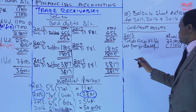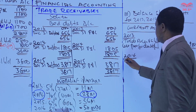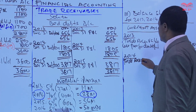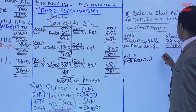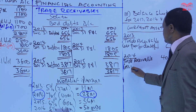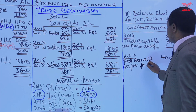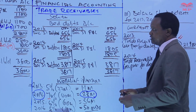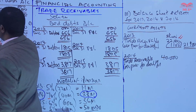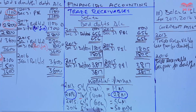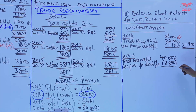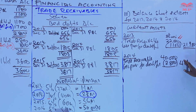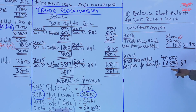We do the same for 2014. The debtors or trade receivables in 2014 are 40 million. So 40 million less provision for doubtful debt — the provision at the end of 2014 is 2.8 million — so we deduct 2.8 million from 40 million, and this gives 37.2 million.